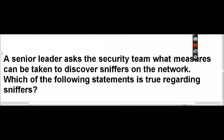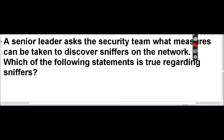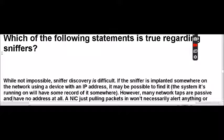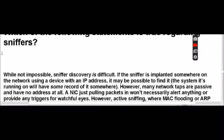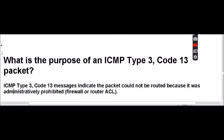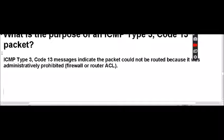A senior leader asks the security team what measures can be taken to discover sniffers on the network. While not impossible, discovery is difficult. If the sniffer is implanted somewhere on a network using a device with an IP address, it may be possible to find it. However, many network taps are passive and have no addresses at all — a NIC just pulling packets will not necessarily alert anything. Active sniffing or ARP spoofing is another matter altogether. What is the purpose of an ICMP type 3 code 13 packet? It indicates the packet could not be routed because it was administratively prohibited via a firewall or router ACL.